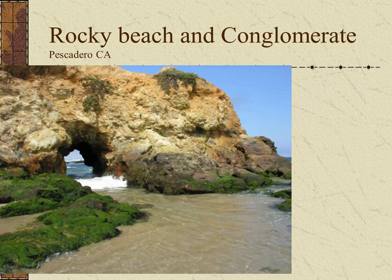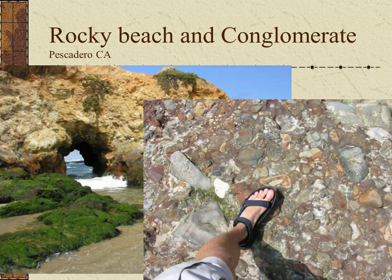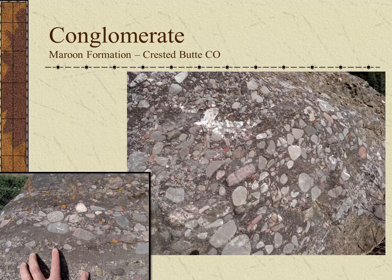Starting with conglomerate, here's a natural sea arch of conglomerate at Pescadero, California. On close inspection, you can see that it is made of large round gravel fragments, some of them up to cobble-sized. Another well-known conglomerate is the Maroon Formation — this boulder was found around Crested Butte, Colorado. You can see the round gravel fragments embedded in the much larger rock.